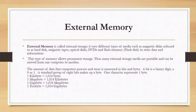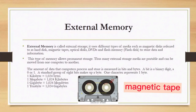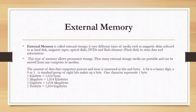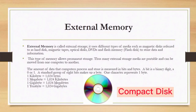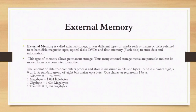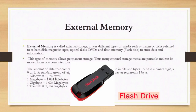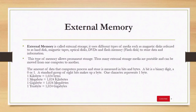External memory is called external storage. It uses different types of media such as magnetic disk — for example, hard disk and magnetic tapes. Another media type is optical disk, which includes DVDs and CDs. We also have flash memory, also called a flash disk, to store data and information. This type of memory allows permanent storage. Many external storage media are portable and can be moved from one place to another, meaning they can be used on one computer and also on other computers.